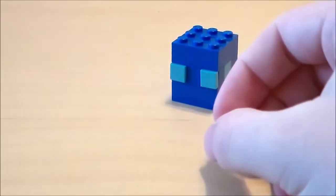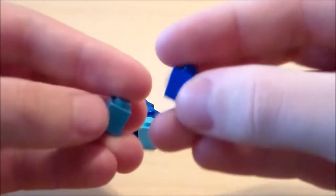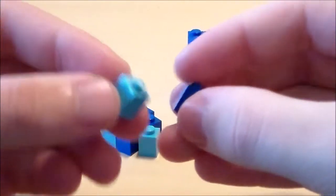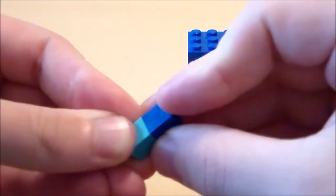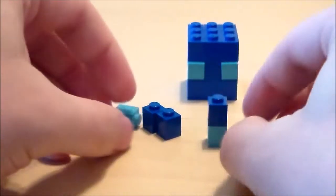And then next I'm going to make the legs for it. So what I'm going to do for the legs is I'm going to get a 1x1 blue brick and a 1x1 lighter color blue brick. And I'm going to put the light color on the bottom with the blue on the top. And then I'm going to make four of those.